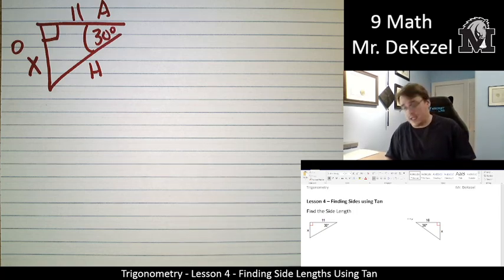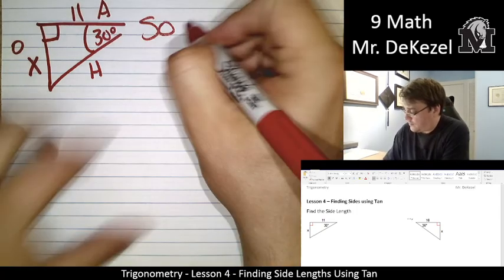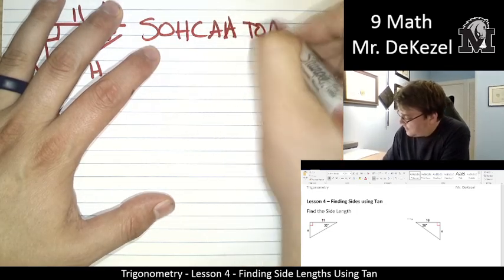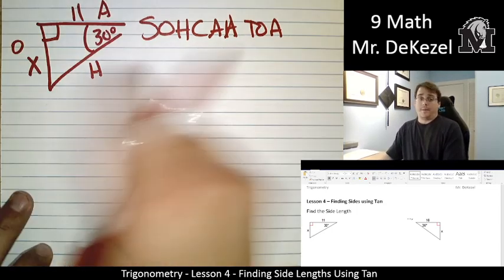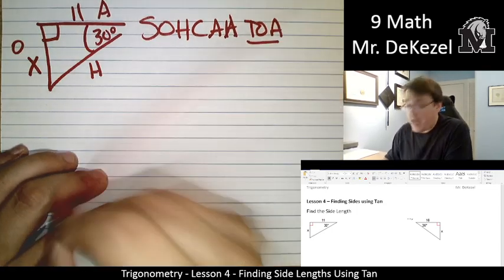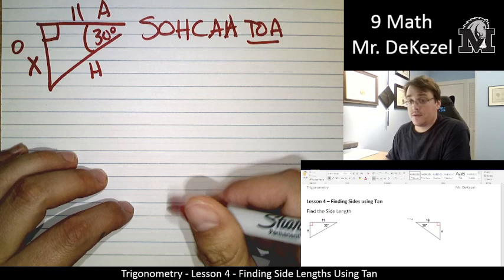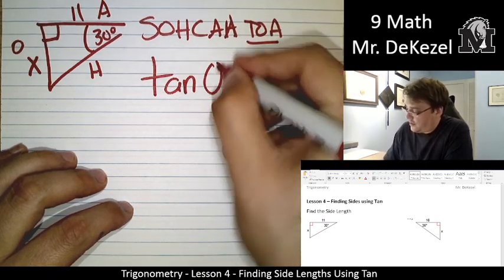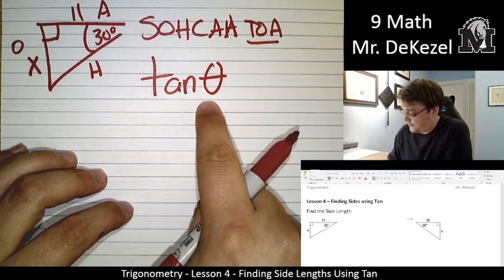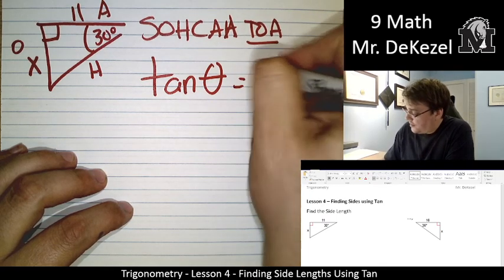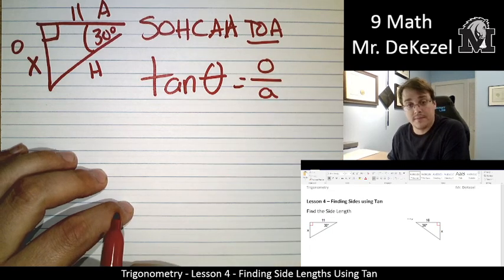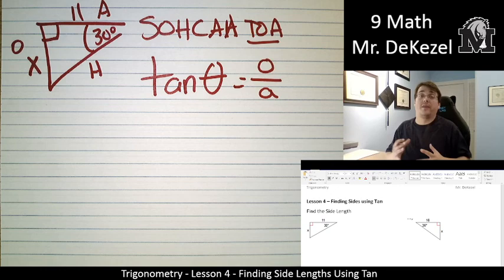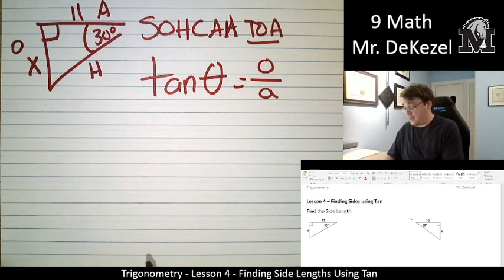The two sides that we are interested in, the one that we want to look for and the one that we have, are opposite and adjacent. So if we write out SOHCAHTOA, opposite and adjacent, that's tan. So we are going to be using this equation. Tan of theta, which is our angle, is equal to the opposite side divided by the adjacent side. Out of this whole thing, there's only one thing we don't know, so we're going to be able to find that. We just don't know the opposite side.